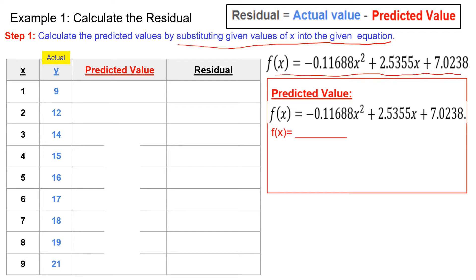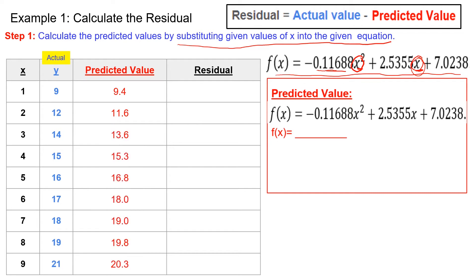For example, plug in x = 1: do one squared, then multiply by negative 0.11688, following order of operations — exponent, then multiplication — and also plug x into the linear term. The first predicted value is 9.4. For x = 2, you get 2 squared times negative 0.11688 plus 2.5355 times 2. The answers are already provided to save time. To calculate predicted values, simply plug your x values into the given equation.